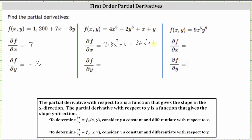Next, we want to find the partial of f with respect to y, so now we treat x as a constant and differentiate with respect to y. The derivative of 4x⁸ with respect to y is equal to zero, because we are treating x as a constant. Then we have minus the derivative of 2y⁶ with respect to y, which is equal to negative two times 6y⁵. Plus the derivative of x with respect to y is zero because we treat x as a constant. And then plus the derivative of y with respect to y, which is one. Simplifying, we have negative 12y⁵ + 1 for the partial with respect to y.